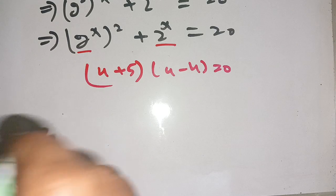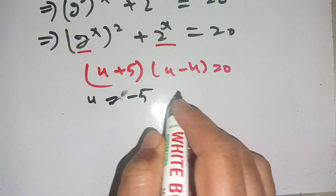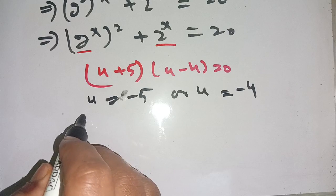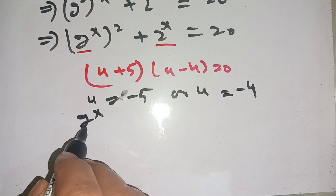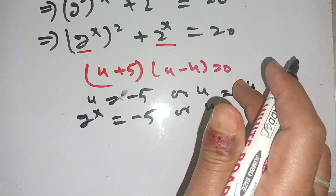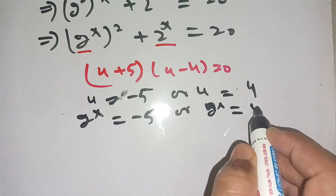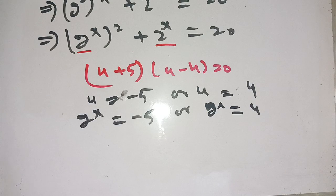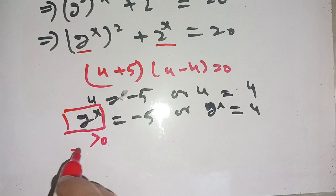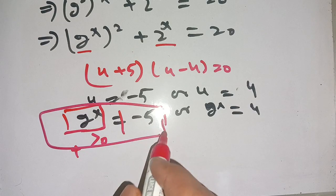Equating both factors to zero, we get u = -5 or u = 4. But u = 2^x, and the exponential function is always greater than 0, meaning it is always positive. Thus 2^x cannot equal -5; this solution is rejected.